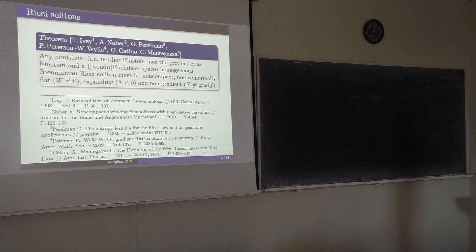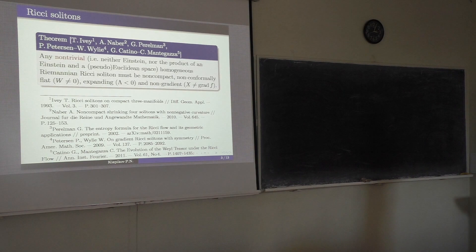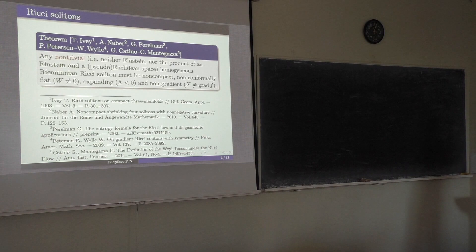We have this compilation of results from many mathematicians. Any non-trivial — that is, not Einstein, not a product of Einstein and pseudo-Euclidean space — homogeneous Riemannian Ricci soliton must be non-compact, non-conformally flat, expanding, and non-gradient. But in the pseudo-Riemannian case, this theorem is not true.